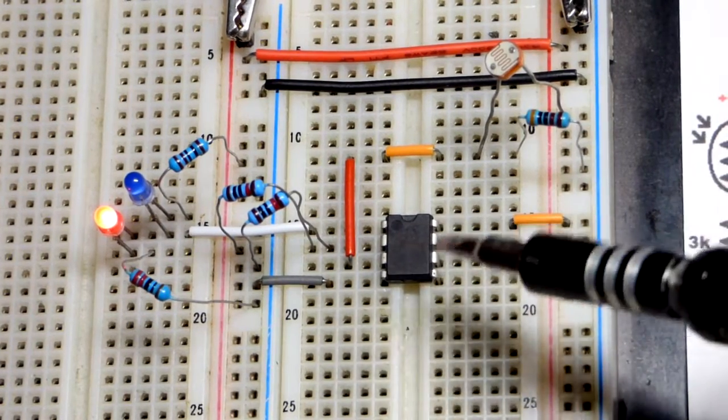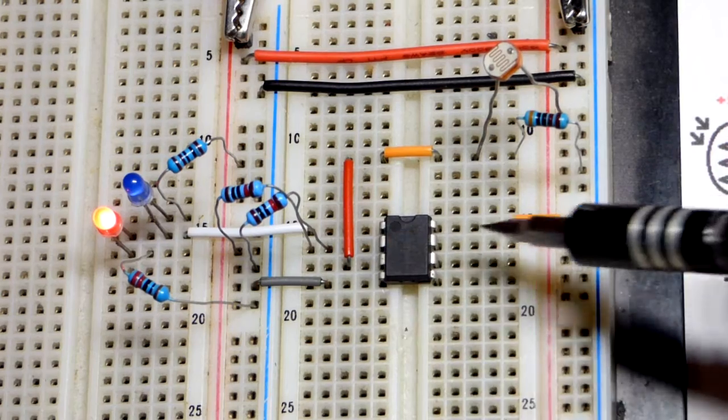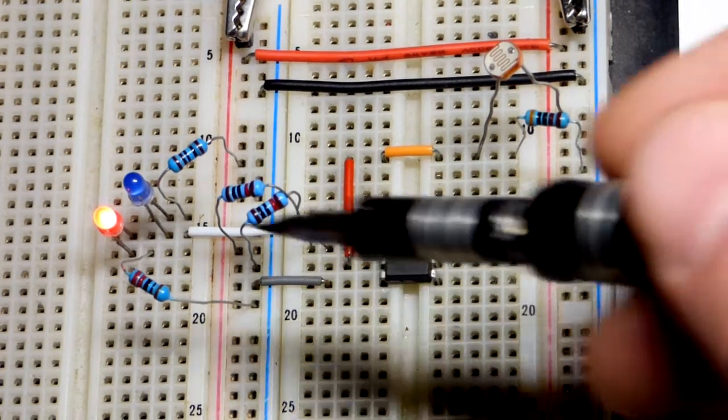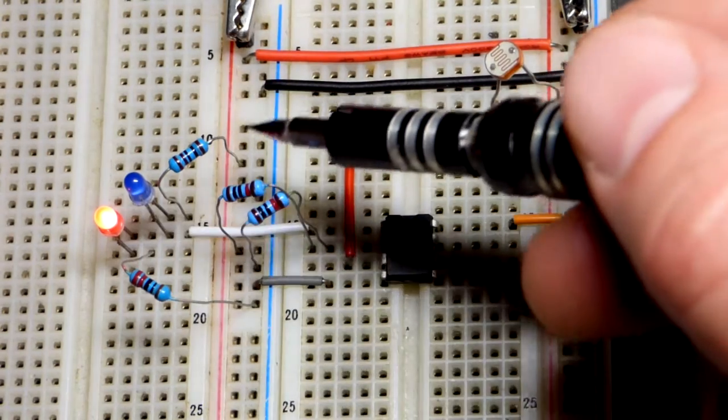And zooming in, we got our dual op amp there, but we're only using one on that side. We got to power it. We're using 5 volts right there. The output up here comes to that jumper to where the LEDs are.